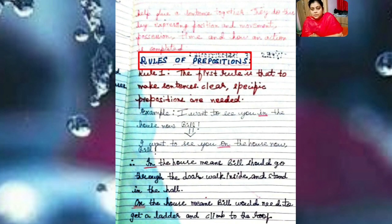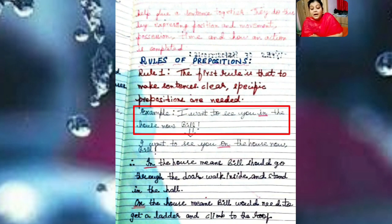Now, rules of preposition. There are two important rules. The first rule is that to make sentences clear, specific prepositions are needed. We need very specific and targeted prepositions. For example, look at my example. Suppose I say two cases: I want to see you in the house, Bill.